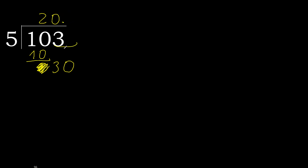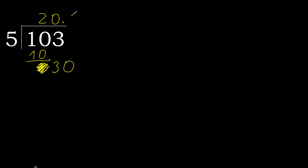0 point, because here 2 numbers — 30. 5 multiplied by 6 is 30, which is not greater. Subtract: 30 minus 30 is 0. Therefore finish it. 103 divided by 5 is 20.6.